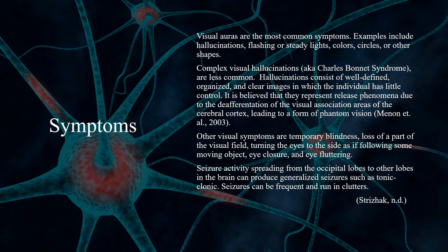It is believed that hallucinations represent release phenomena due to the deafferentation of the visual association areas of the cerebral cortex, leading to a form of phantom vision. Other visual symptoms include temporary blindness, loss of a part of the visual field, turning the eyes to the side as if following some moving object, eye closure, and eye fluttering.